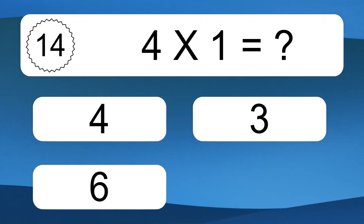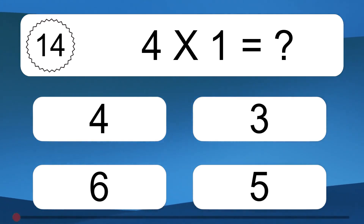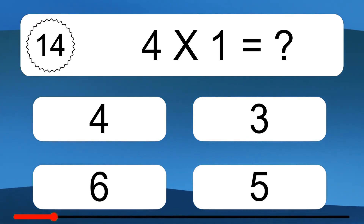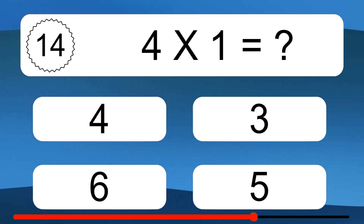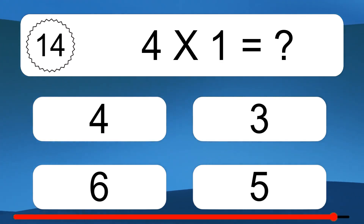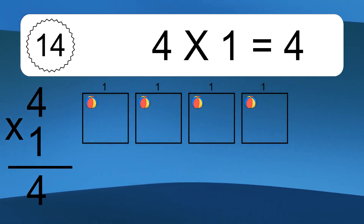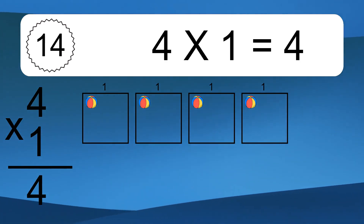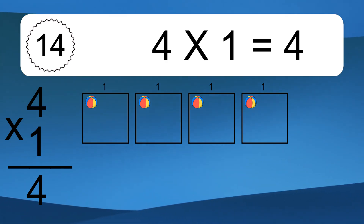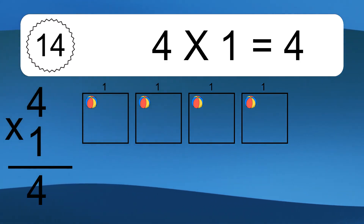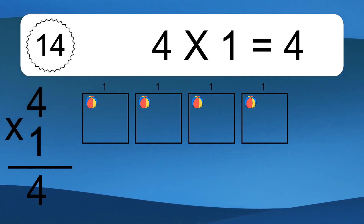Four times one equals what? Four times one equals four. We have four boxes, and each box has one colorful ball inside. If you count all the balls in all the boxes together, you will have four times one balls. This equals four balls.